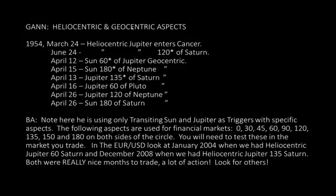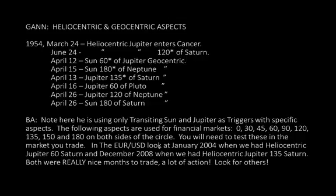GAN heliocentric and geocentric aspects, 1954: March 24 — heliocentric Jupiter enters Cancer; June 24 — heliocentric Jupiter 120 degrees of Saturn. That must be important because look how far out it is — these are all March and April dates and that 120 is way out there. Then: Sun 60 of Jupiter geocentric, Sun 180 of Neptune, Jupiter 135 of Saturn, Jupiter 60 of Pluto, Jupiter 120 of Neptune, Sun 180 of Saturn. Note: he's using only transiting Sun and Jupiter as triggers with specific aspects.